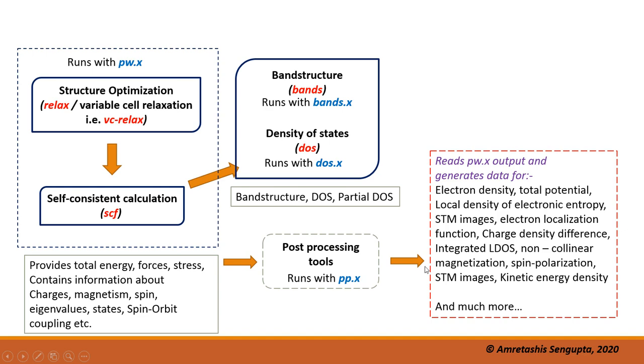Then you can do post-processing with the executable pp.x, and this will give you cube files and data files for electron density, total potential, local density of electronic entropy, STM images, electron localization, charge density difference, L-DOS, integrated L-DOS, spin polarization, and so on.